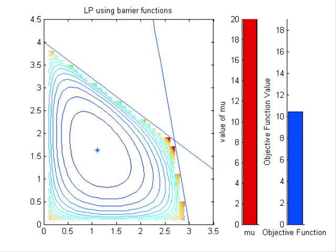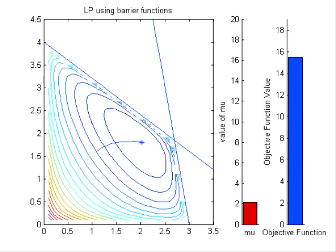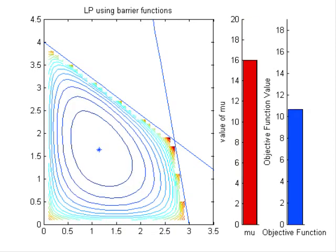The following graphs have the value of mu shown in a red bar, as well as the value of our original objective function shown in a blue bar for each iteration. If we decrease mu slowly and take the time to find the exact optimal point for each value of mu, we trace out the central path.